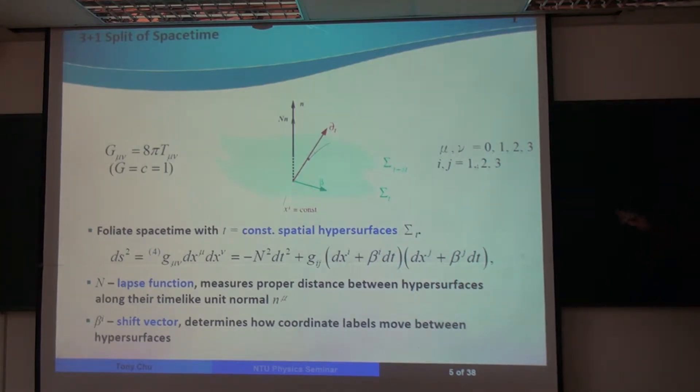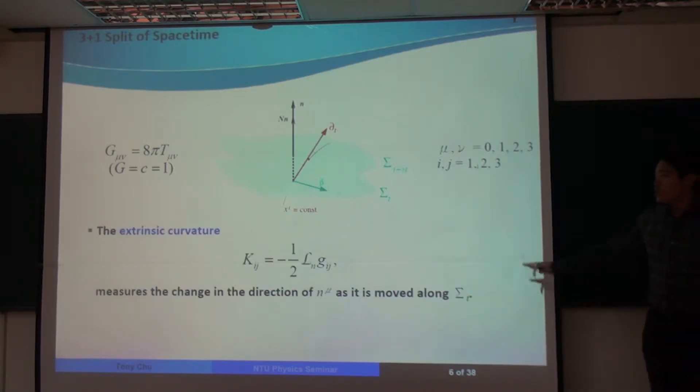And in addition to this 3 plus 1 split of the spacetime metric and the spatial metric and lapse and shift vector, we also define another quantity called the extrinsic curvature, which is minus one-half the Lie derivative of the spatial metric along the timelike unit normal n to one of these spatial hypersurfaces.